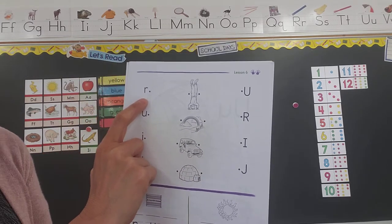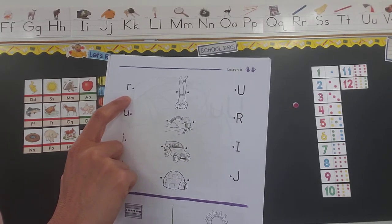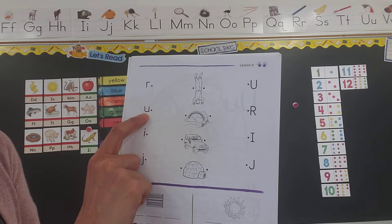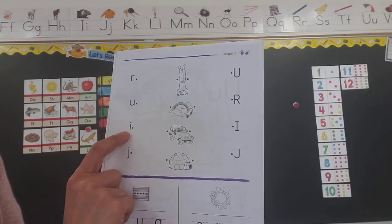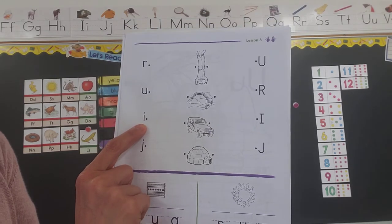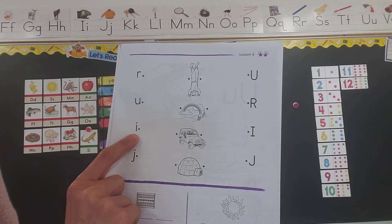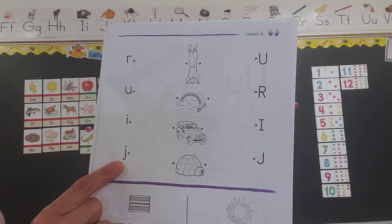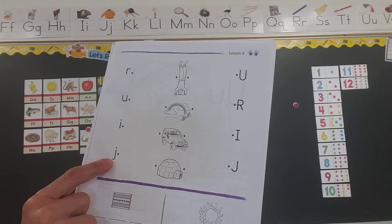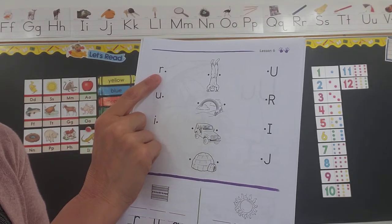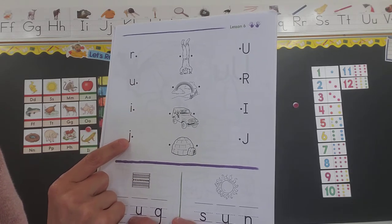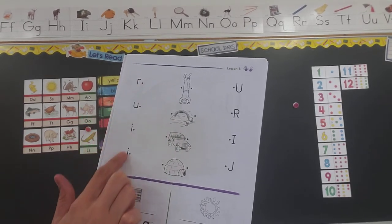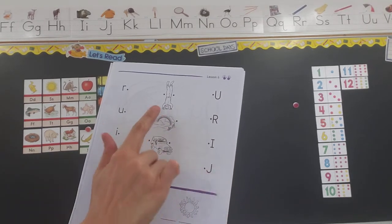R makes the 'r' sound. The next one down is the one we had today — the U makes the 'uh.' The next one down is another vowel: an I. And remember what the I says. And the J — the last one is the J, and J says 'j.' Starting back up at the top, let's just do the sounds one more time. These are the lowercase letters and these are the uppercase.